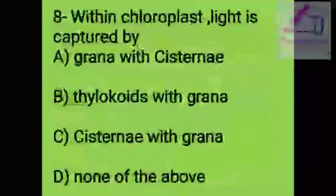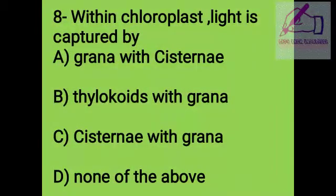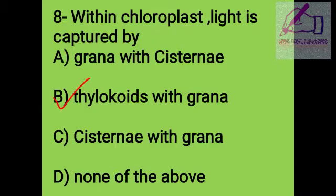Question 8: Within the chloroplast, light is captured by: A. Grana with cisternae, B. Thylakoid with grana, C. Cisternae with grana, D. None of the above. The right answer is B, thylakoid with grana.